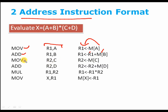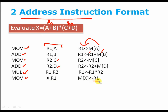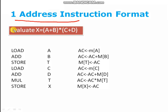Then we will perform a move operation again for C and an addition operation for D. Now R1 stores the first sum and R2 stores the second value. So we just have to multiply R1 and R2. The multiplication result will be stored in R1. Then we will perform the move operation once again to store the value of R1 into memory of X.